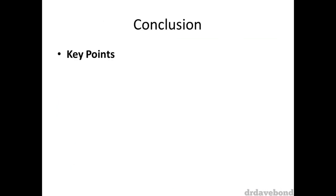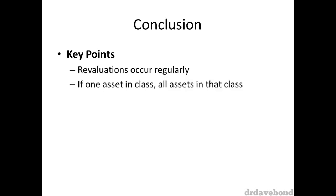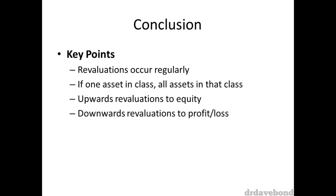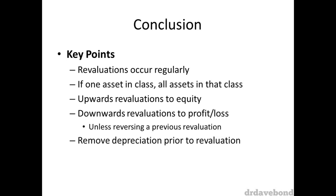That wraps up accounting for revaluations of property, plant and equipment. The key takeaway points are: one, revaluations occur regularly; two, if one asset in the asset class is revalued, all assets in that class get revalued; three, upwards revaluations go to equity; four, downwards revaluations go to profit and loss; five, however, if you are reversing a previous revaluation, things work out a little differently; six, remember to remove depreciation prior to the revaluation; and seven, recalculate the annual depreciation expense after the revaluation.